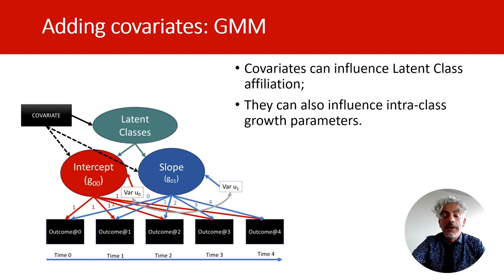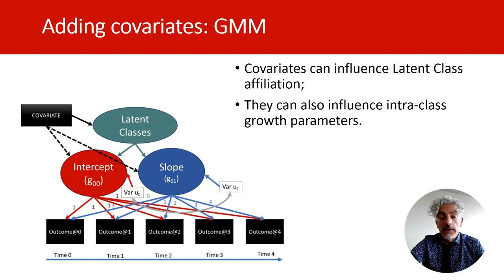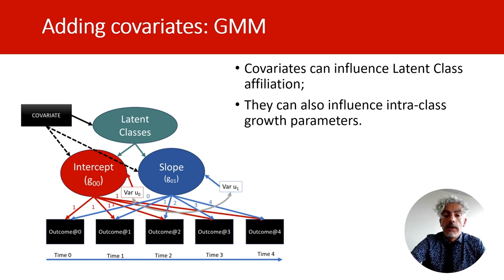Since growth mixture models also allow individual variability around the growth parameters within classes, the covariates we introduce can also influence intraclass individual variation around the intercepts and slopes. For example, within adolescents that show a chronic trajectory of drug use, the specific trajectory of an adolescent within this group may be affected negatively by parental separation, and the increase in drug use may be more dramatic for those exposed to family separation. Models with covariates can therefore be more complex and explore more nuances in mechanisms of influence.